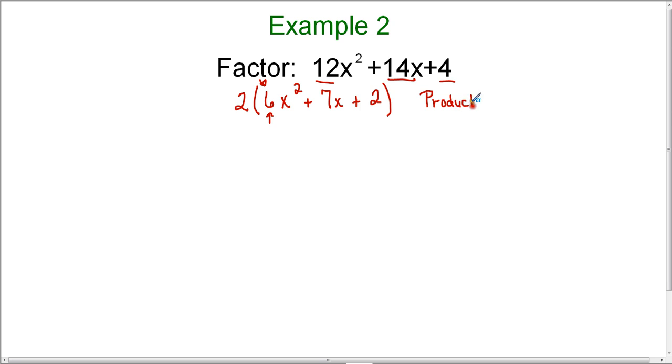I'm first looking for a product of 6 times 2, which is 12. Remember, it's the lead coefficient times the constant. So I need a product of 12 with a sum of 7.